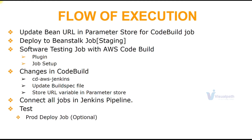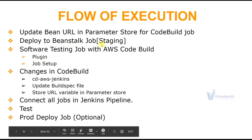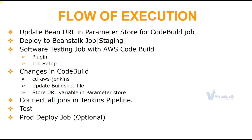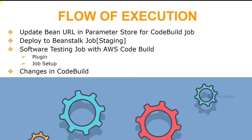Optionally, you can create one more job to deploy to the production Beanstalk environment. For this you will need another Beanstalk and RDS setup, but it will be essentially the same job as the staging deployment except the URL and Beanstalk environment name will be different. Now let's make this happen — let's go to the AWS Management Console.